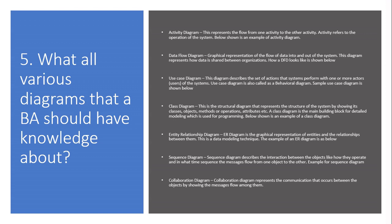Entity relationship (ER) diagram — a graphical representation of entities and the relationships between them; this is a data modeling technique. Sequence diagram — describes the interaction between objects, how they operate, and in what time sequence messages flow from one object to another. Collaboration diagram — represents the communication that occurs between objects by showing the messages flow among them.